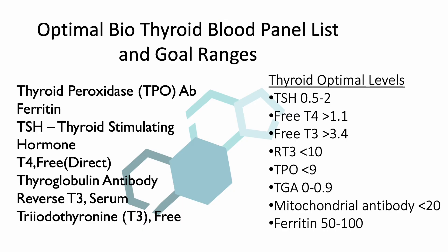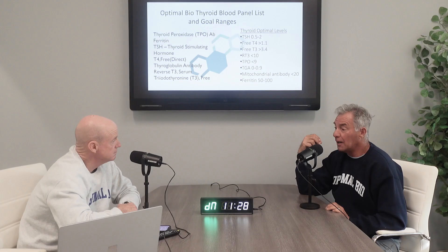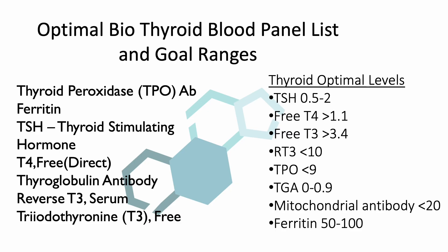T4 becomes T3 and reverse T3 — they're called isomers or enantiomers, mirror images of each other. Just rotating where the iodine is makes it active or turns it off. TPO is an enzyme called thyroid peroxidase that helps convert and form the hormone. TGA — thyroglobulin antigen — is a molecule that carries it around. When those are attacked by antibodies, that's called Hashimoto's hypothyroidism. Ferritin, the iron stores in the body, is an important cofactor for TPO to do its work.